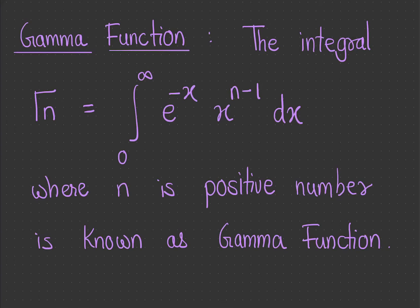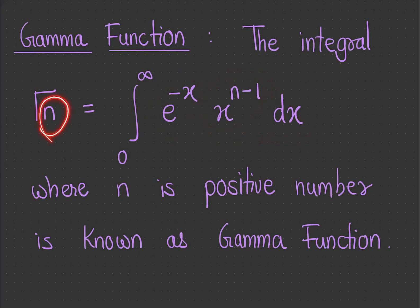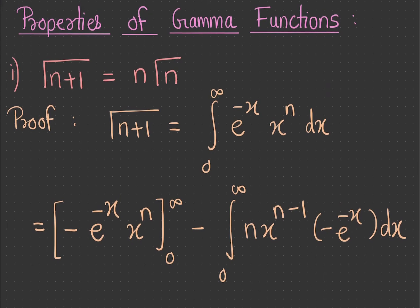The next function is the gamma function. It is denoted by the gamma symbol, and is defined as the integral from 0 to infinity of e raise to minus x into x raise to n minus 1 dx, where n is a positive number. This integral is called the gamma function.